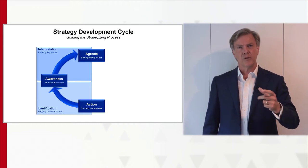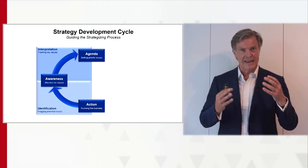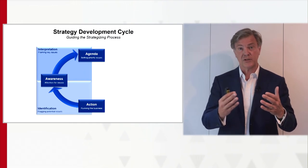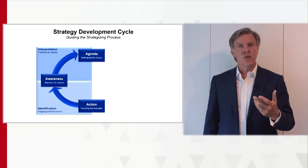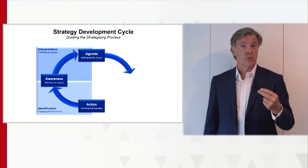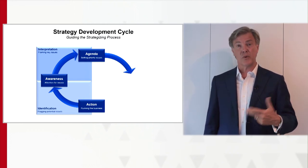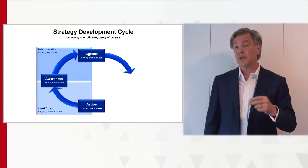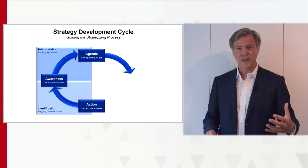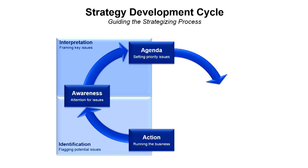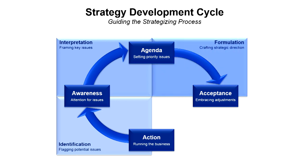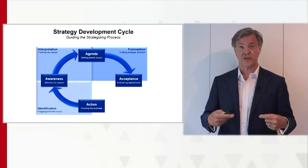You need to guide people through this whole process and get them to say: yes, this is something we should put on our short list, we need to do something about this because it's threatening or because it's an opportunity. Then we reach a phase many of you will recognize: once we have something on the agenda, we have to come up with a solution, a path forward — not only something on paper, but something that people will accept and get behind. We need to go from the agenda to acceptance — a decision we can all embrace. That is the phase of formulation. Formulation is not only putting it on paper; it's putting it into the hearts and minds of the people.